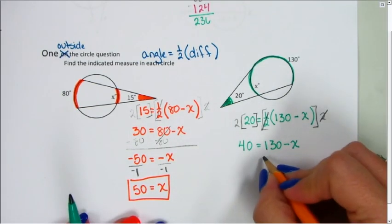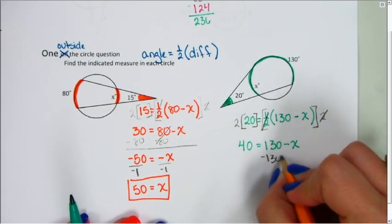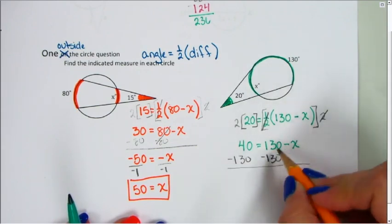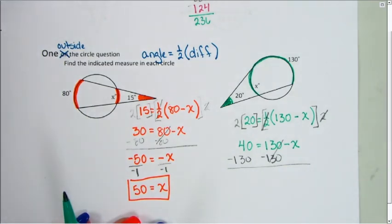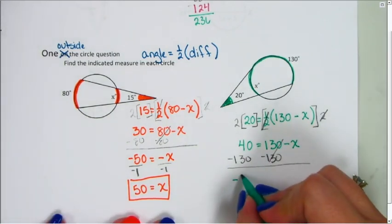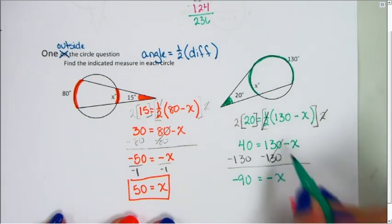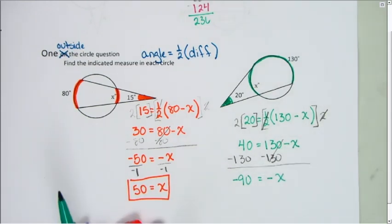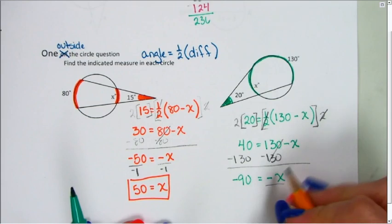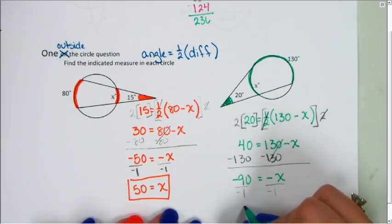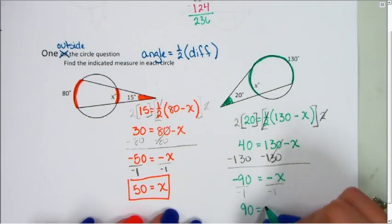I'm going to subtract 130 on both sides. 40 minus 130 is negative 90, which equals negative x. I don't want negative x, I want positive x, so I'm going to divide both sides by negative 1. That gives me 90 equals x.